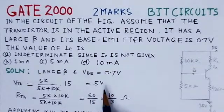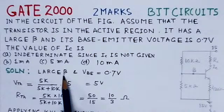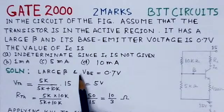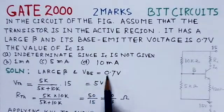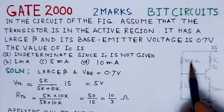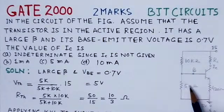To find the collector current IC, it's given that the value of beta is large. When beta is large, the emitter current equals the collector current, and the base current turns out to be zero. VBE is given as 0.7 volts.